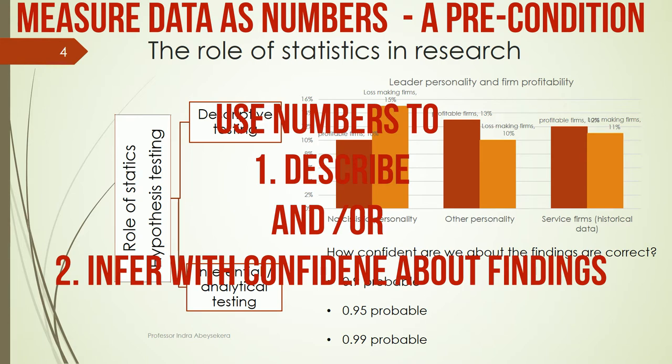In summary, a key condition is that we must have numbers — we measure our phenomena using numbers. We use those numbers to test our hypothesis or educated guess. When we test, we can use descriptive statistics to present our findings, or we can use inferential and analytical testing to state to what extent we are confident about the findings.